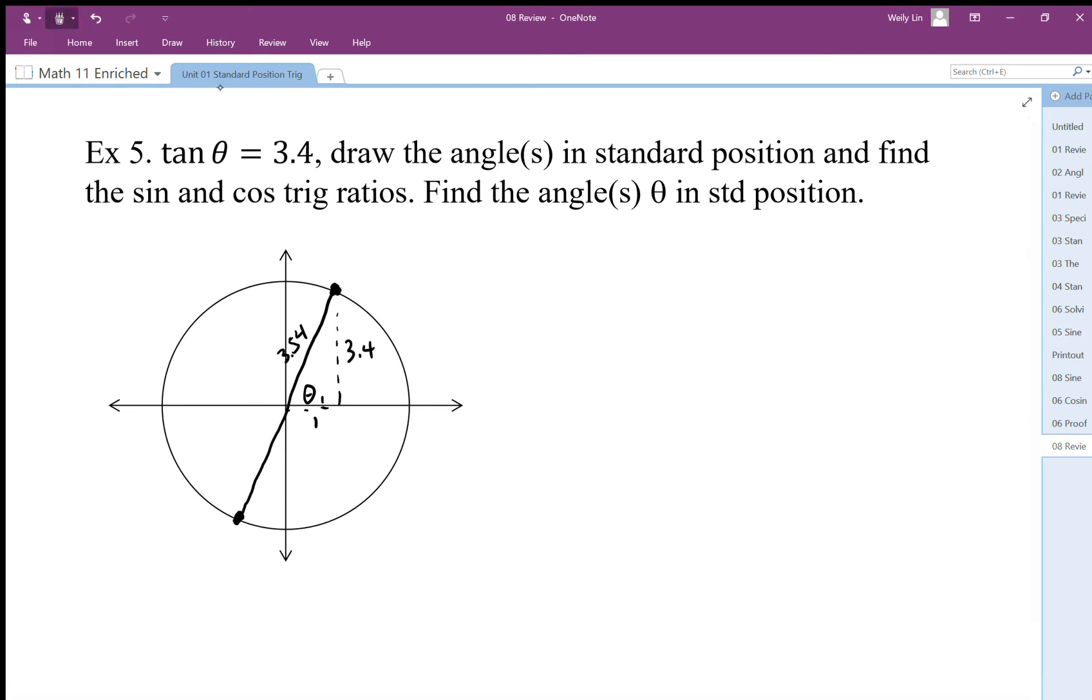We need to also consider the other triangle here. That's going to be negative 1, negative 3.4, that's going to be 3.54 along there, and that theta we'll call theta 2.